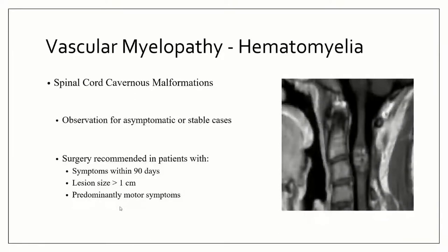If the cavernous malformation is not causing problems, leave it alone. If they're asymptomatic and stable, do not touch them. If they're large, you may need to act. The criteria for best surgical outcomes: new symptoms within about three months, a large lesion, or predominantly motor neuron signs — these patients tend to do better. Patients with mostly pain or sensory loss do not benefit as much from surgery. There are actually different types of AVM malformations — the spinal dural AVF we just discussed is classified as type 1. There are four other types, including subtypes.